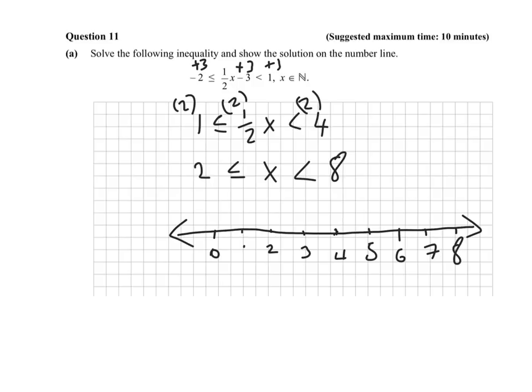So it can't be, for example, 2.5 or 2.3. It can only be whole numbers. So the way you show that is you put a dot on each of the whole numbers that it can be. So the whole numbers that it can be are 2, 3, 4, 5, 6 and 7, but not 8. So we put the dots from 2 to 7.